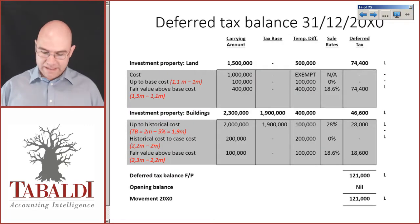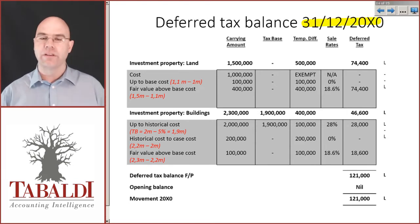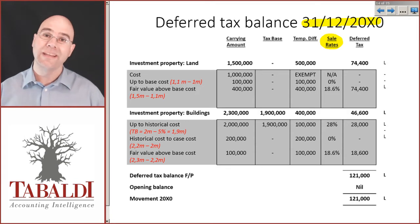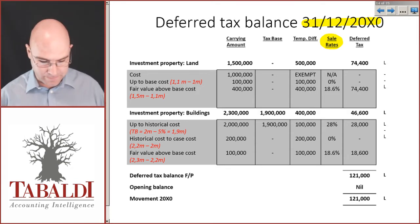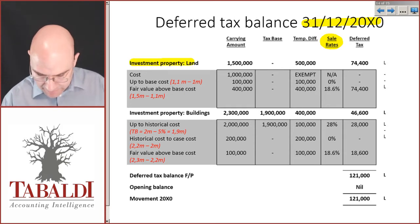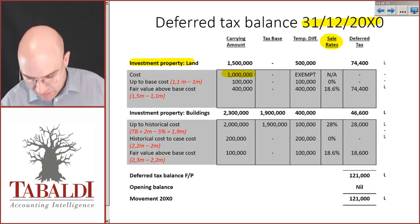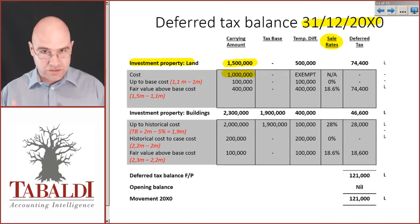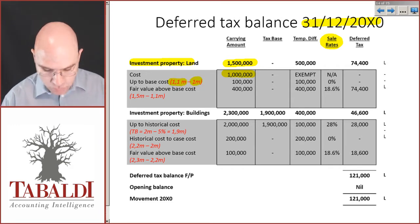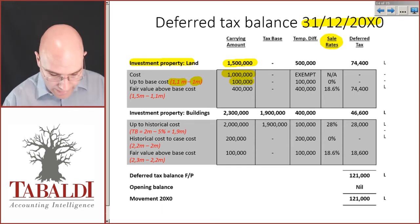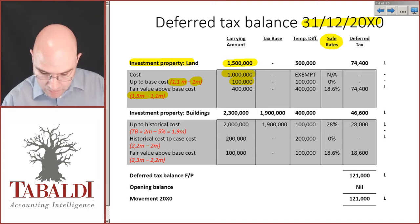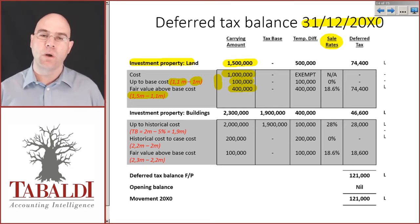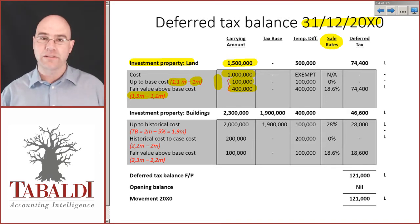Now our deferred tax balance at 31 December 20x0. We use sales rates because investment property is always presumed to be recovered through sale. For land, the total carrying amount is 1.5 million. The fair value adjustment is 500,000, but there are two components: the 1.1 million base cost minus 1 million historical cost is 100,000, and the 1.5 minus 1.1 is 400,000. So 1 million plus 100 plus 400 gives 1.5 million. The accounting entry was for the 500,000 fair value gain.